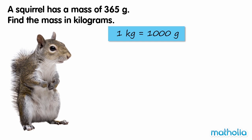To find the mass in kilograms, we need to divide 365 by 1000. Recall that we can divide by 1000 by shifting the decimal point three places to the left.